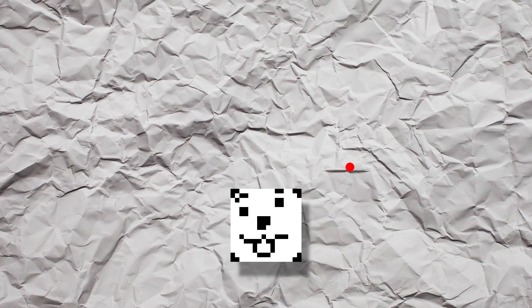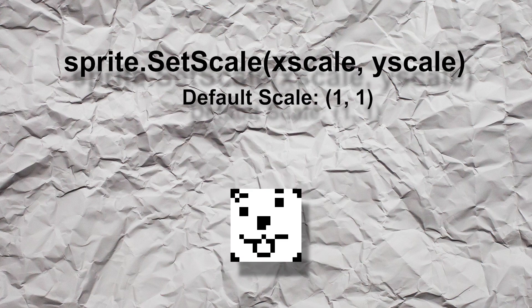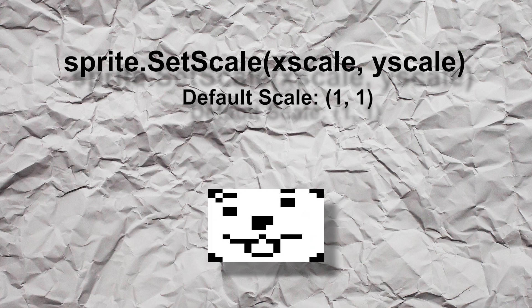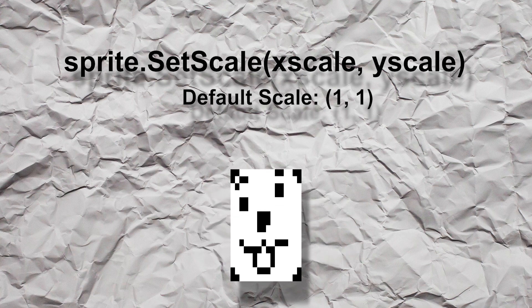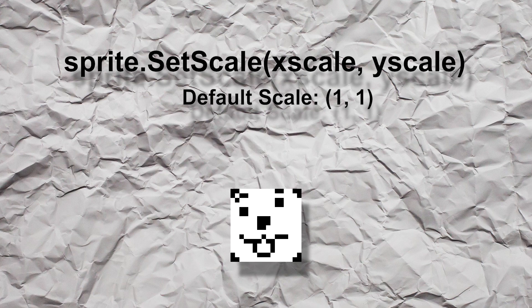Values below 0 and above 1 are also accepted. Scale determines how large your bullet will be. By default, the scale is 1,1 and is set using the setScale function. xScale controls the horizontal scale and yScale the vertical scale. The scaling also happens around the pivot.